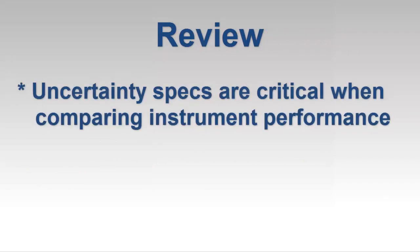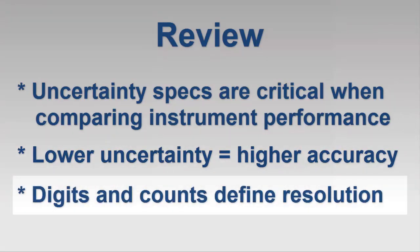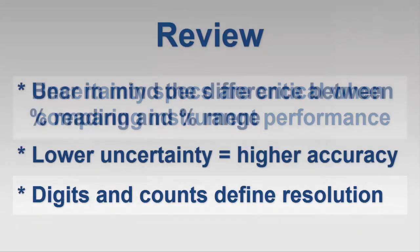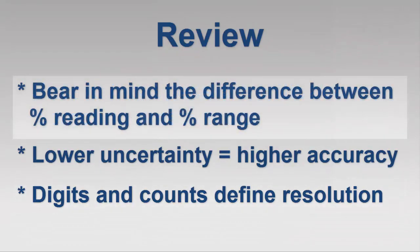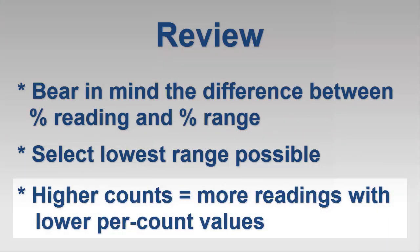Let's review a few key points we've covered. It's important to understand uncertainty specification to properly determine an instrument's accuracy. The lower the uncertainty, the higher the accuracy. Digits and counts define an instrument's resolution, but not its accuracy. When comparing performance, bear in mind whether the instrument's uncertainty is based on percentage of reading or percentage of range. Be sure to select the optimal range, generally the lowest possible, when making a measurement. And finally, high-count instruments can produce more readings with lower uncertainties than low-count instruments.